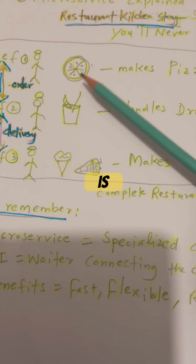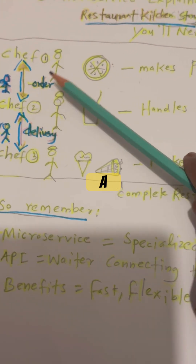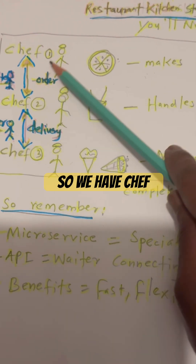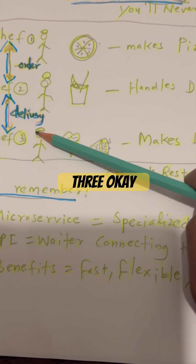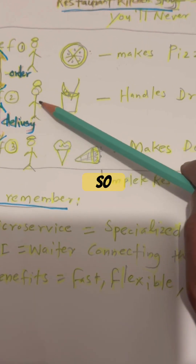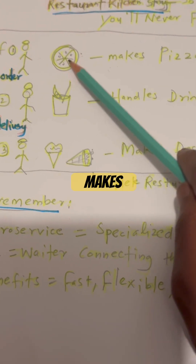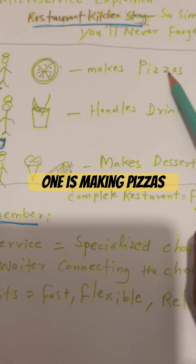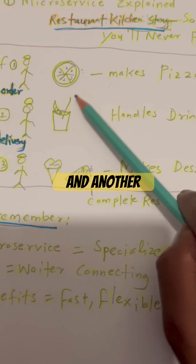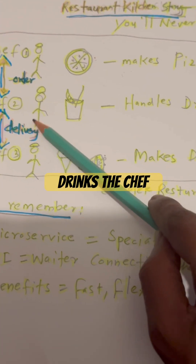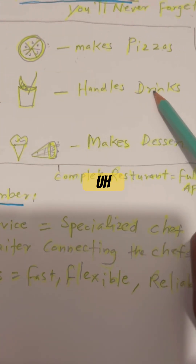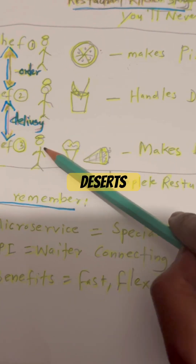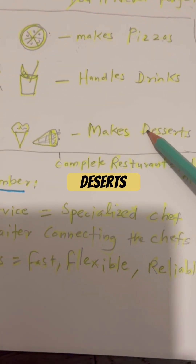A microservice is like a specialized chef in a restaurant. So we have chef one, chef two, chef three. Chef one is making pizzas, chef two is handling drinks, and chef three is making desserts.